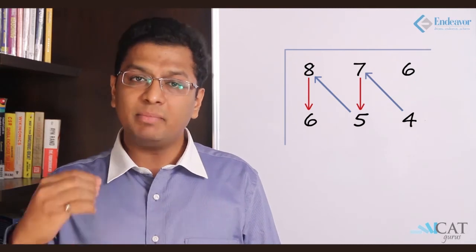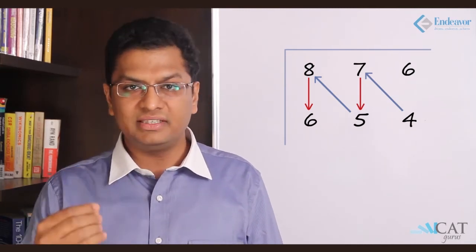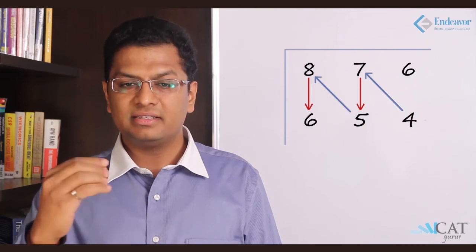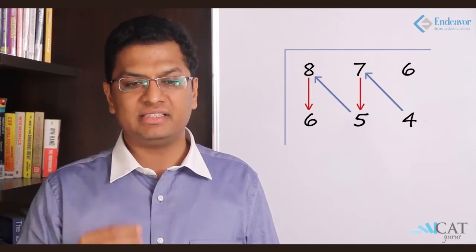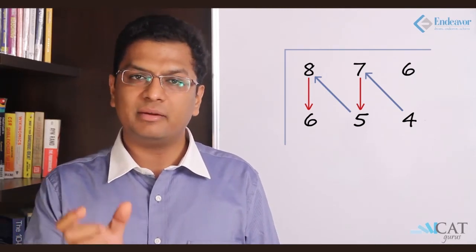Now 33 is then multiplied by the previous divisor. So 33 into 8 plus 6. Now 33 into 8 plus 6 will give us 270. So this is how we get the remainder.